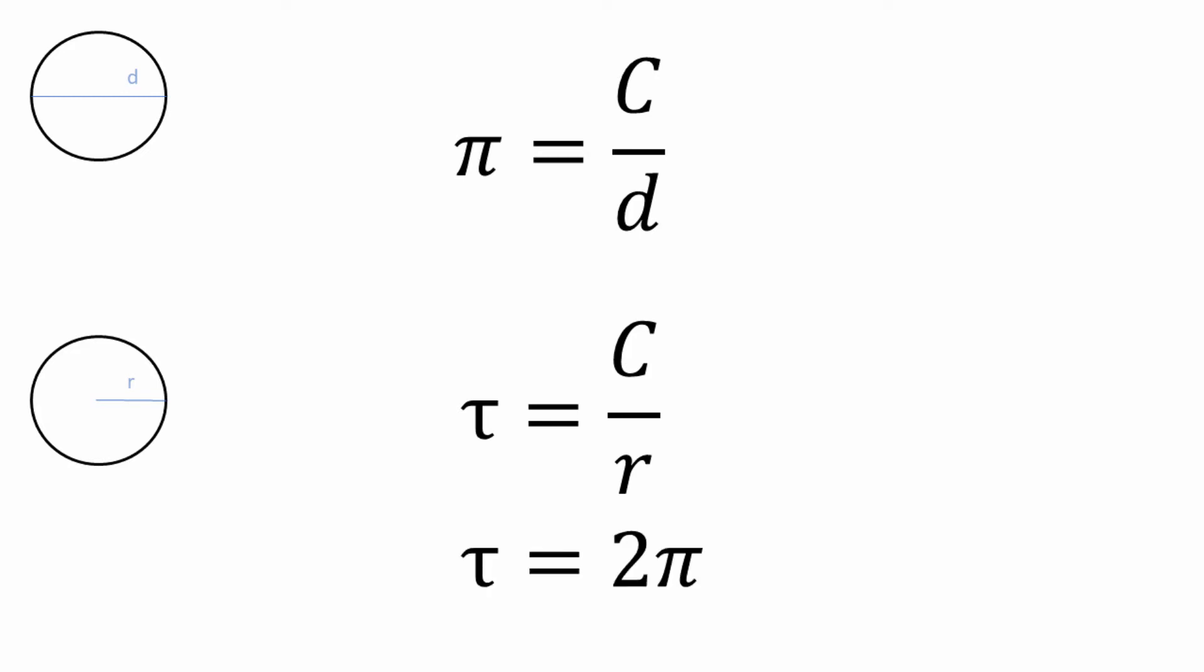An example of that would be the circle constant pi, which has been defined as the ratio of a circumference of a circle and its diameter. Pi has been known since antiquity, but only in 2001 it was pointed out that it would be much more consistent to use the ratio of circumference to radius, with a proposal to call this tau, where tau is 2pi.